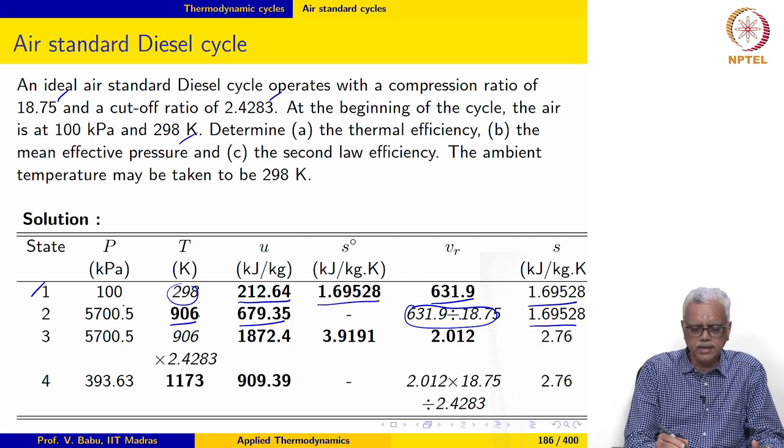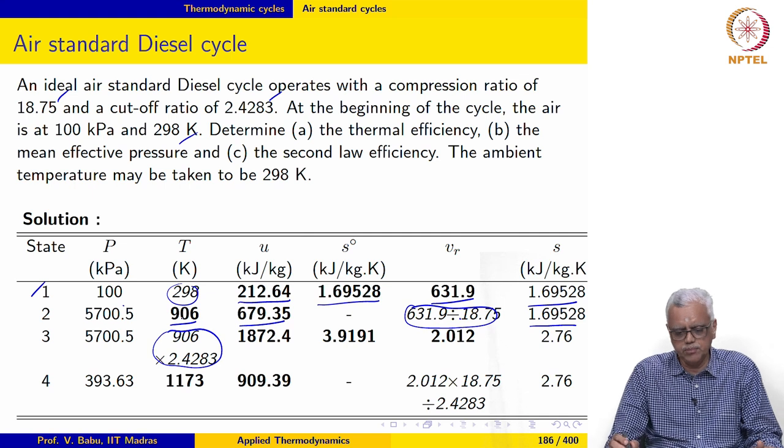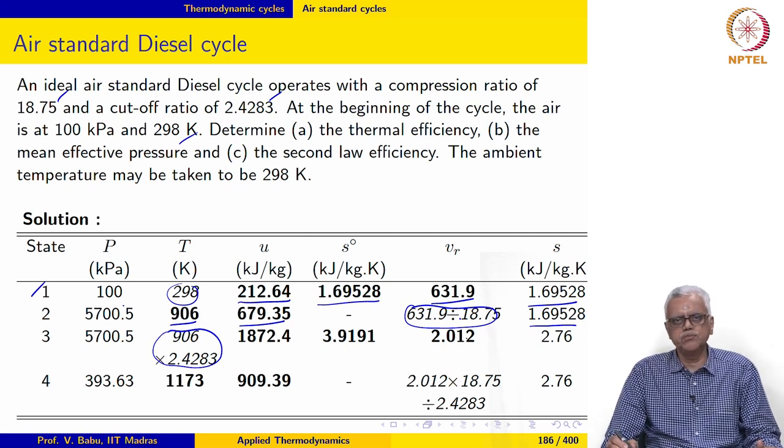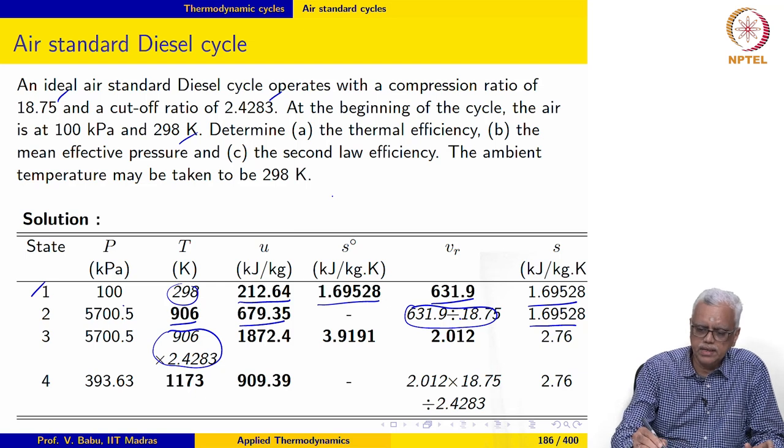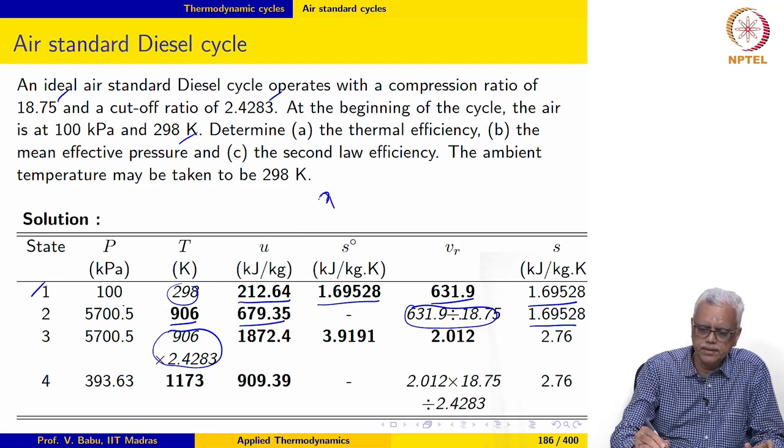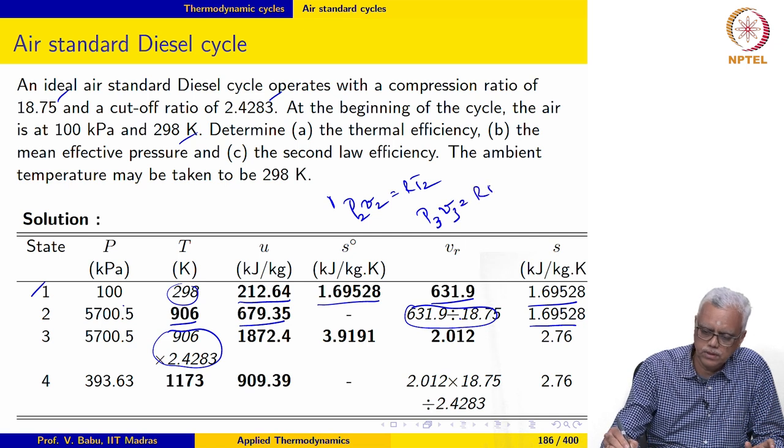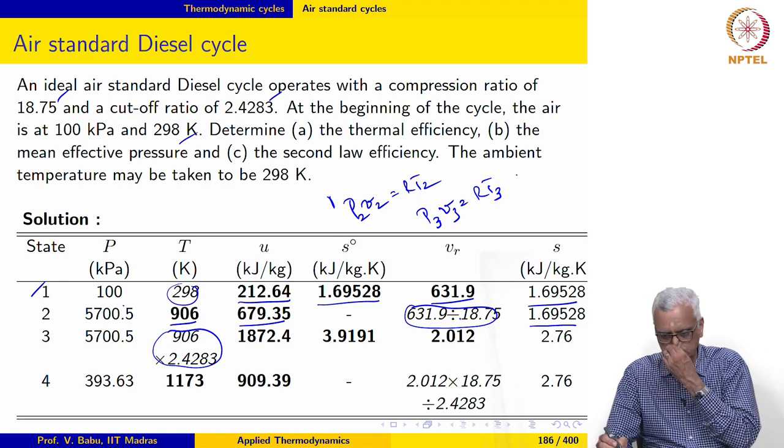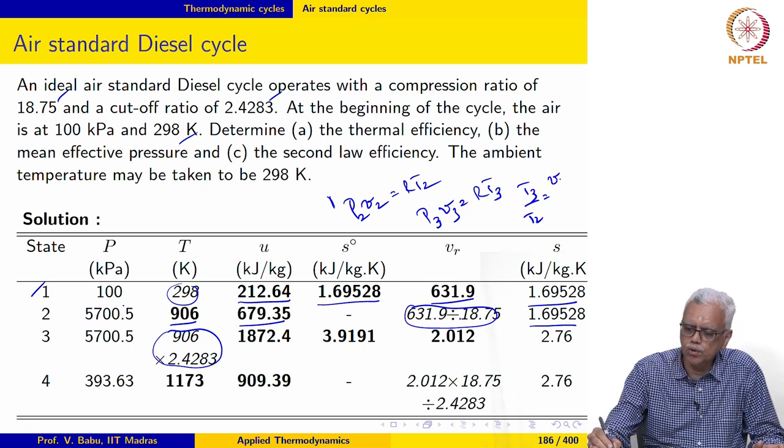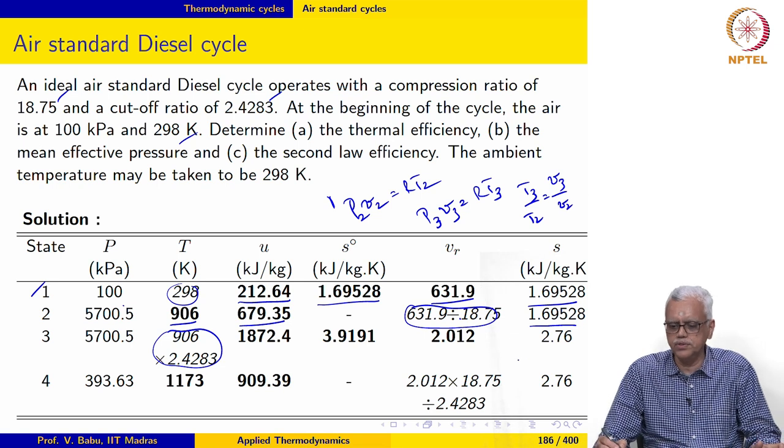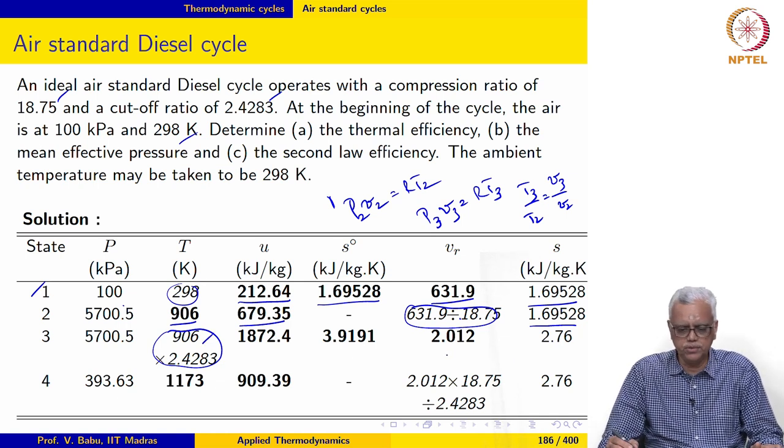At the end of the heat addition process, temperature T3 equals T2 times Rc because it is a constant pressure process. Let us see how this comes about. Between state 2 and 3, if I apply equation of state at state 2 and 3, P2V2 equals RT2 and P3V3 equals RT3. If we divide these two expressions, we get T3 over T2 equal to V3 over V2. Since P3 equals P2, V3 over V2 is nothing but Rc, which is why T3 equals T2 times Rc.